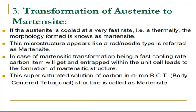The next transformation is transformation of austenite to martensite. If austenite is cooled at a very fast rate, athermally, then the morphology or structure formed is known as martensite. The microstructure appears like a rod or needle type, which is generally referred to as martensite. Rapid quenching of austenite to room temperature often results in the formation of the martensitic phase. Martensite is a very hard structure in which carbon is in solid solution. Ideally, the martensitic reaction is a diffusionless transformation. The reaction begins at a martensitic start temperature (Ms) and ends at a martensitic finish temperature (Mf).